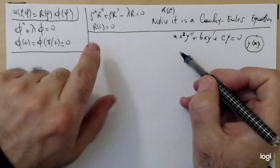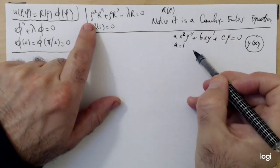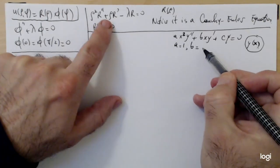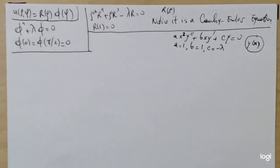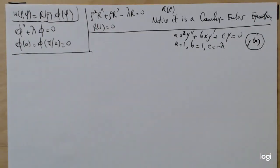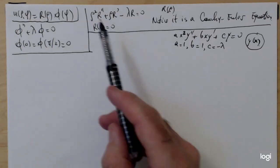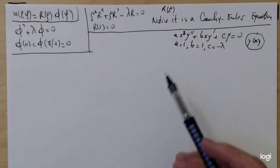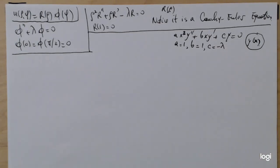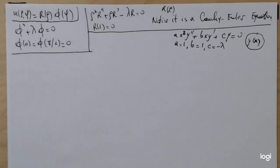To make it clear, the actual coefficients in my case are a equals 1, b equals 1, c equals minus lambda. Pause and make sure you understand this before we move on with solving the PDE. The constant coefficients are 1, 1, minus lambda. Make sure you have the formula for solving the Cauchy-Euler equation in front of you when the time comes to solve this equation in R.